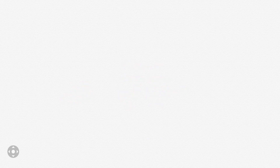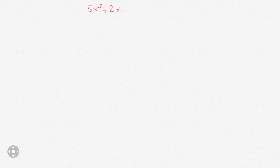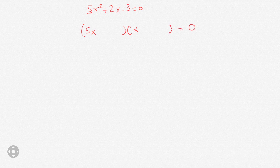Let's try another. The next one: 5x squared plus 2x minus 3 equals 0. Now this one has a 5 there, so we're going to need a 5x and an x, because 5x times x equals 5x squared. And then we need two numbers that multiply to negative 3, so we would want a 3 and a 1.